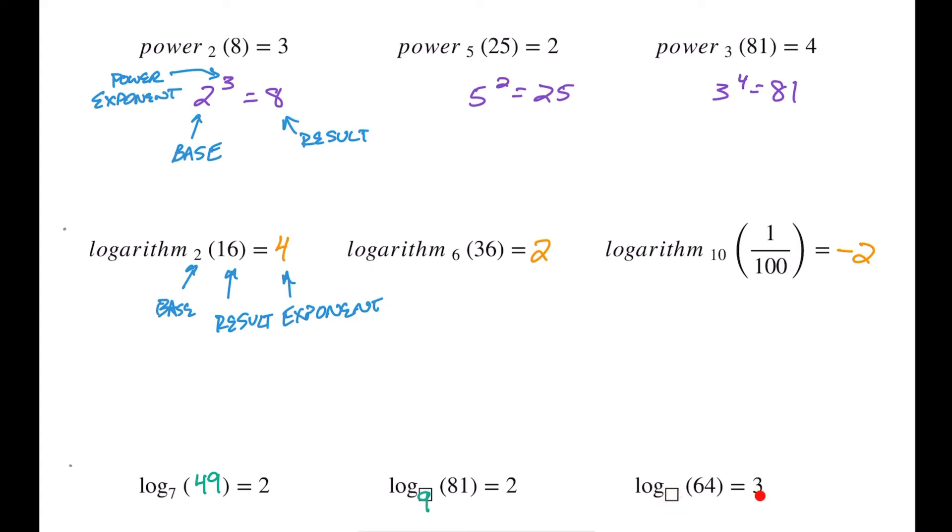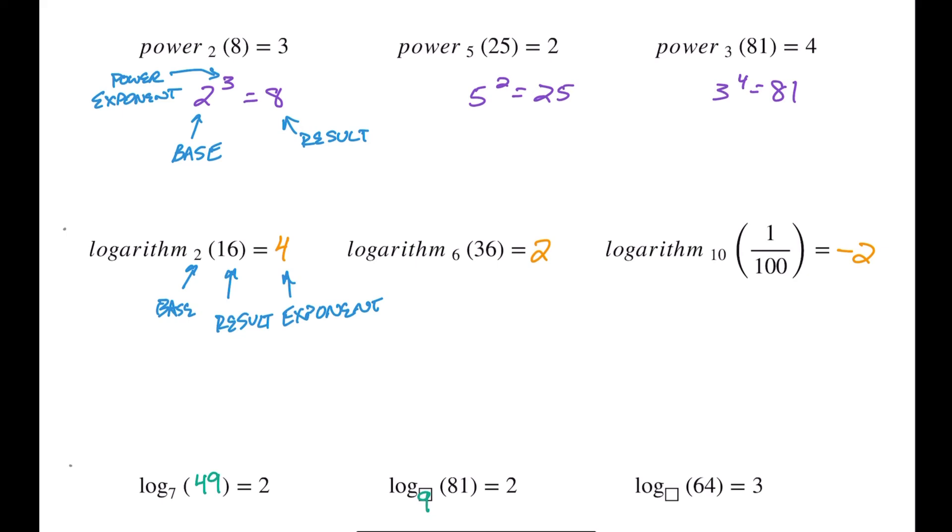And then finally, we're missing the base again. Something to the third power is equal to 64. So let's see, 8 squared is 64, but that's squared, so I need to go down smaller than that. 6 squared is 36, so I put another 6 on there, that's not going to work, so it's going to be too big. So 4, 4 times 4 is 16, 16 times 4 is 64. So here our base is going to be 4. Let's see, let's make that just a little bit clearer. That's a 9 and this is a 4. I probably shouldn't have put that box in there, but hey, what do you know.